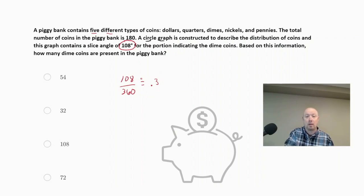What we need to do is we need to go back into the problem and see how many number of coins are in the piggy bank. So we have 180 coins in the piggy bank. So we're going to take 180, we're going to multiply it by our 0.3, again using our calculator. And if we multiply that out, we're going to get our answer of 54 dimes.